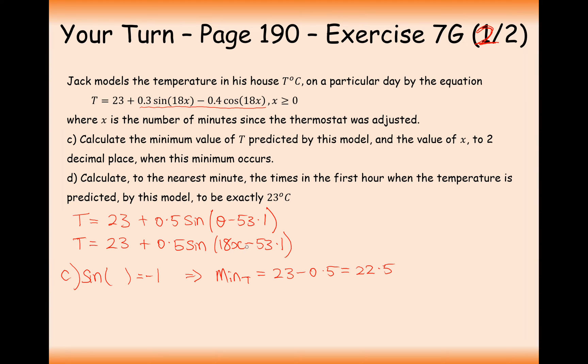When is this going to occur? It's going to occur when the angle equals 270 degrees. Set 18x minus 53.1 equal to 270 degrees. We could have used minus 90, but if we add 53 degrees onto that, we'd still get a negative number, and we don't want a negative time in minutes. Add 53.1 to the other side, giving us 323.1, then divide by 18. It's going to be 17.95 minutes.